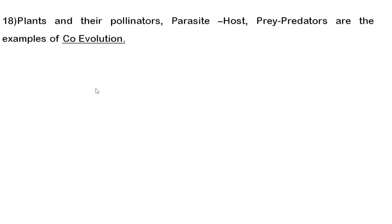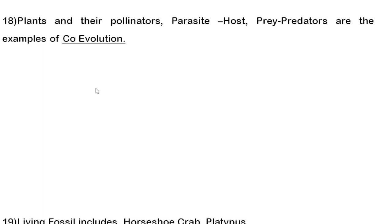Examples of keystone species include the Indian banyan tree, bees, sea otter, and alligator. Eighteenth question: plants and their pollinators, parasite and host, and prey and predator are examples of co-evolution, where both species reciprocally affect each other's evolution. The immune system is also an example of co-evolution.